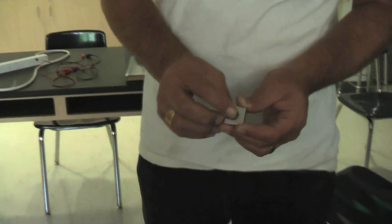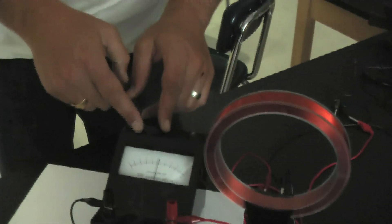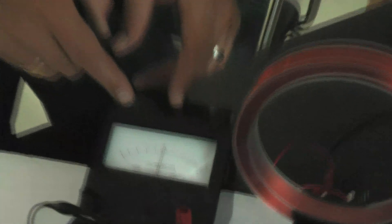First I have here a rare earth magnet, a coil of wire, and then a galvanometer. So this is a measure of how much electricity is produced.